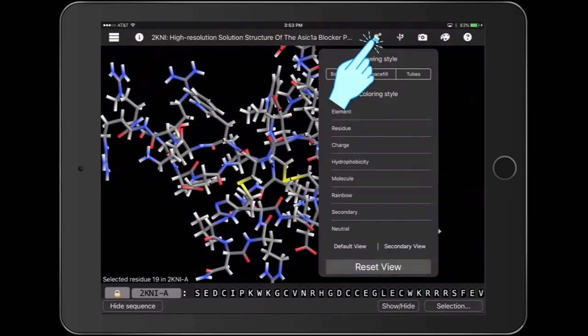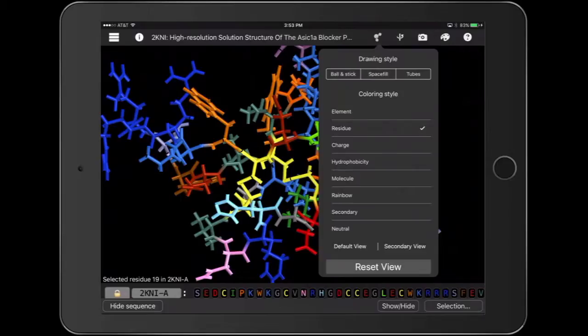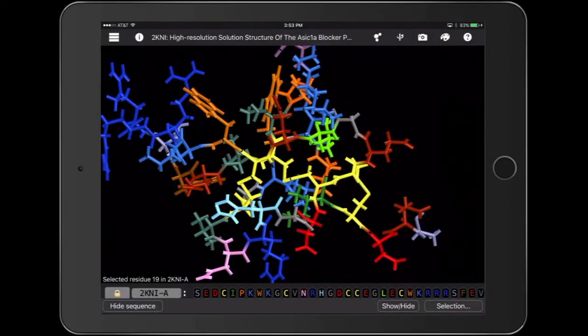If I open the style menu and color by residue, I can see that the yellow colored residues start with C, indicating they're cysteines.